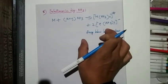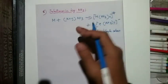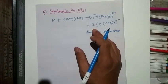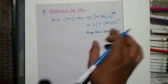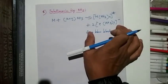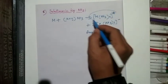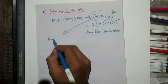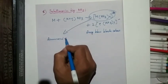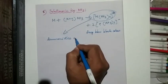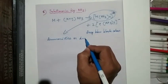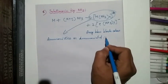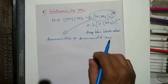The color and properties of the solution in liquid ammonia were also discussed for Group 1 elements. The ammoniated ions formed in this process can be recovered.